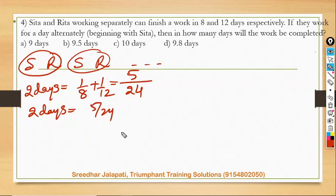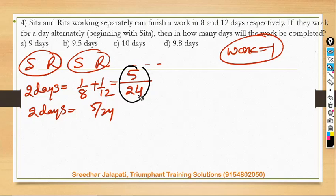And in the next two days also the same thing happens. They'll be able to finish another five by twenty-four, the part of the work. But we say work will get over when we get fraction one. Unfortunately, by multiplying five by twenty-four with any integer, we won't get one.